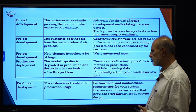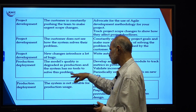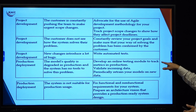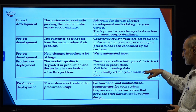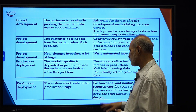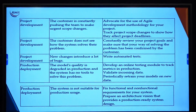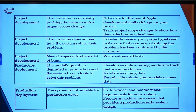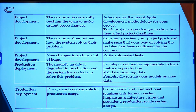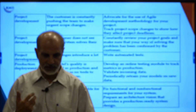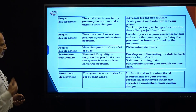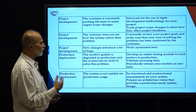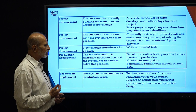For deployment: if model quality degrades in production and the system has no tools to address it, develop an online testing module to track metric changes in the production system, validate all incoming data, and periodically retrain your model. If the system is not suitable for production usage, fix functional and non-functional requirements from software engineering for your system, and prepare an architectural vision that provides a reproduction-related system design. With this understanding, we are in a position to avoid risk and make the system more commercially viable and in a steady state. Thank you.